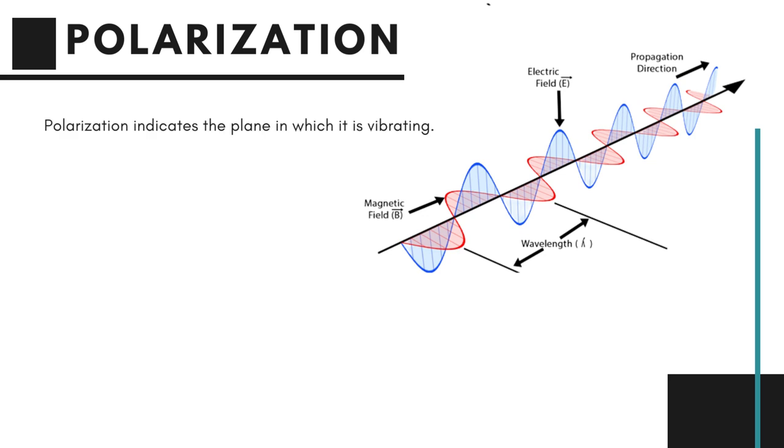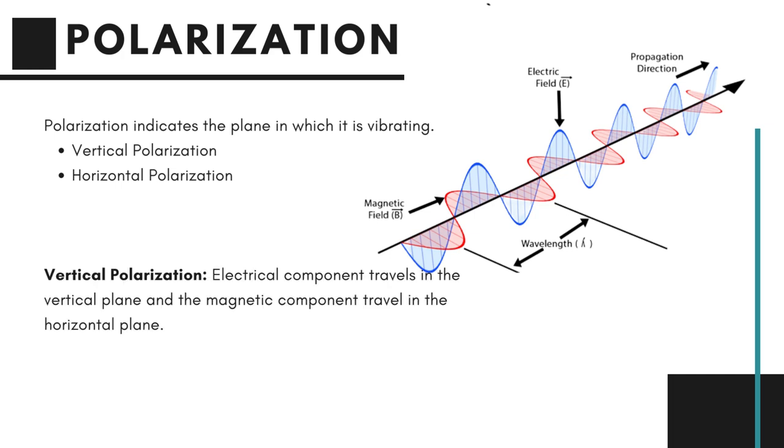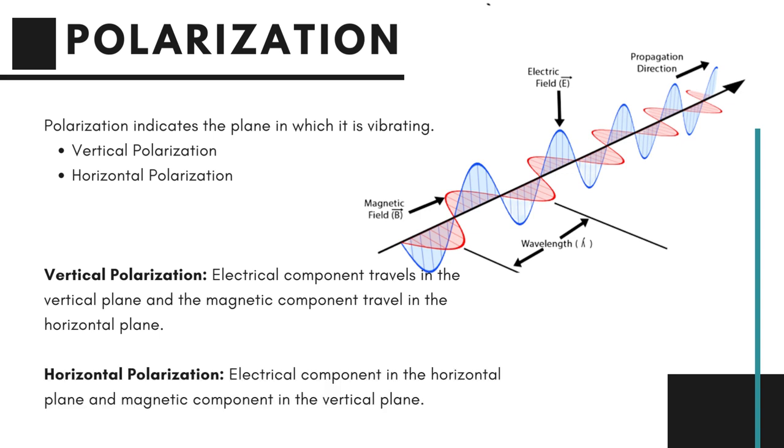Polarization indicates the plane in which it is vibrating. And for this purpose, the plane of electric field is used. Vertical and horizontal polarization are the most straightforward forms of polarization. When the transmission of wave is made from a vertical aerial, the electrical component travels in the vertical plane and magnetic component travels in the horizontal plane. This is called vertical polarization. Horizontal polarization is vice versa: electrical component in horizontal plane and magnetic component in vertical plane.